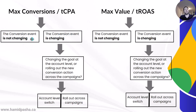If the conversion event is not changing, an example of that scenario would be you are currently using target CPA to bid to online signups. Now you want to track values with those signups and use target ROAS to optimize bids. Then you need to see whether you want to change the goal at the account level or roll out the new conversion action across campaigns.